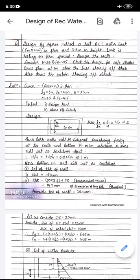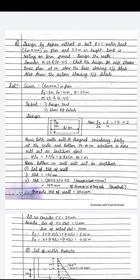Step five is calculation of design constants as done in working stress method. Step six is calculation of reinforcement in the short wall — divided into near face of water and away from face of water. Step seven is reinforcement in the long wall. Step eight is design of bottom 1 meter as vertical cantilever. Finally, step nine is checking for stresses: t'/t + σ'ct/σct ≤ 1, then reinforcement detailing.